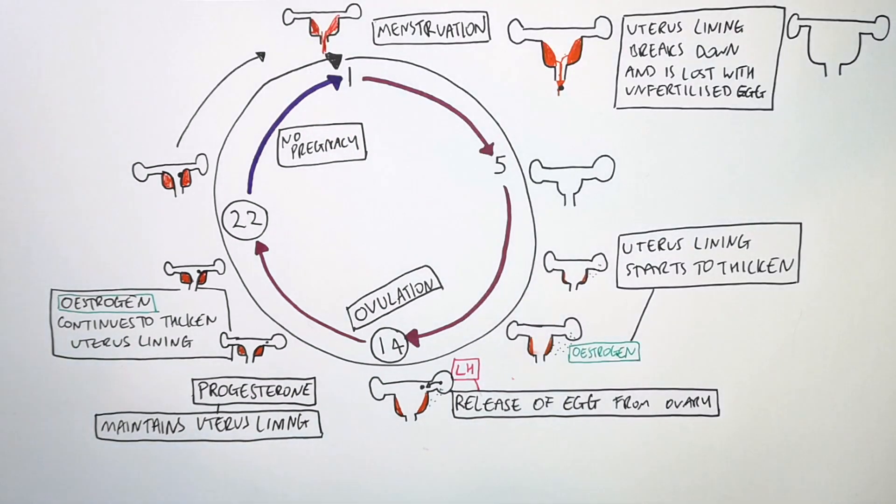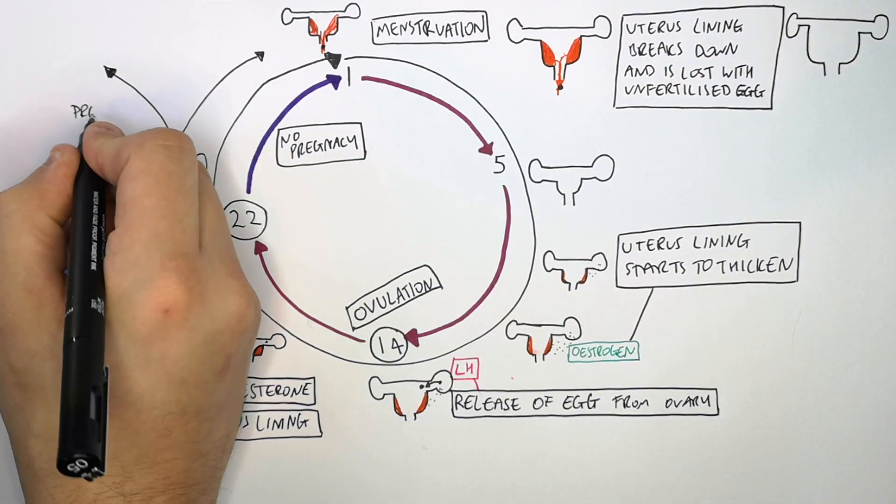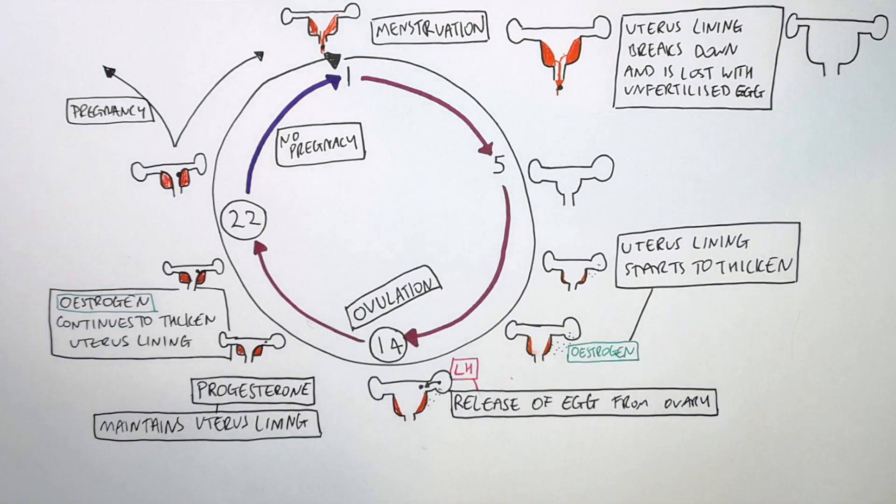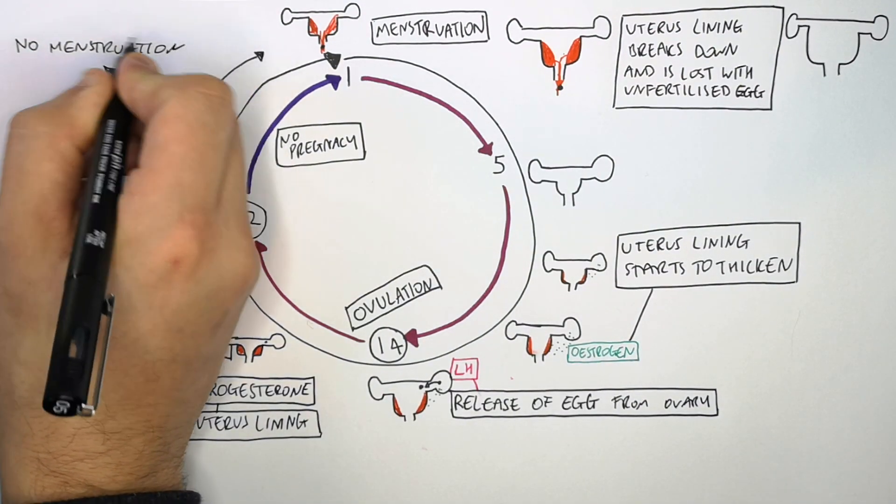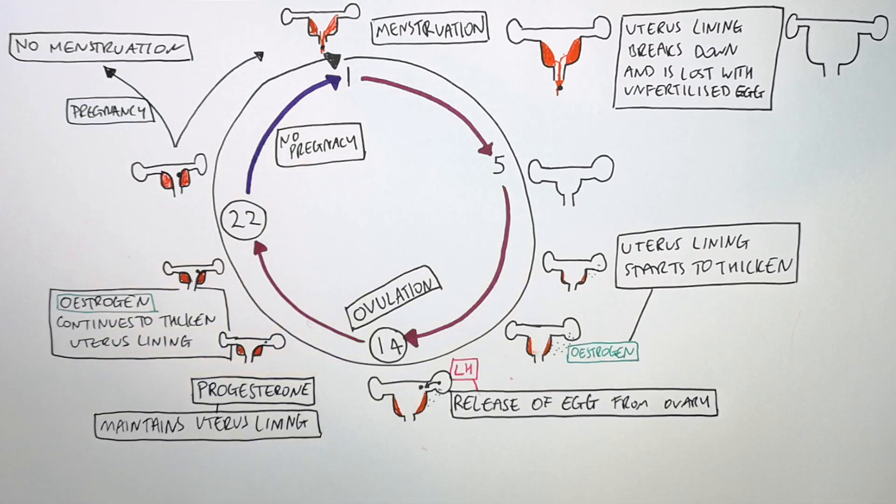However, if the woman is pregnant and an embryo has embedded onto the uterus lining, she will not menstruate. She will not menstruate for another 9 months.